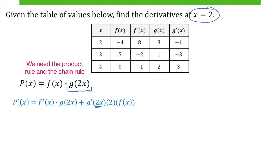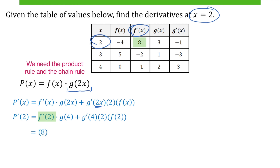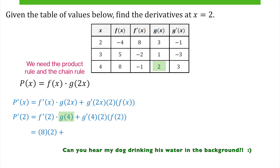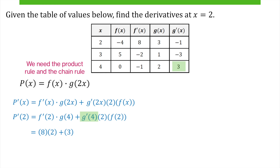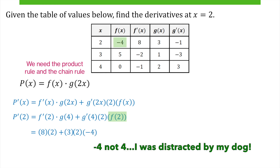It wants the derivative at x equals 2, so anywhere we see an x, we'll plug in a 2. To evaluate this we need to find f prime of 2, g of 4, g prime of 4, and f of 2. Glancing up and back at the table: f prime at x equals 2 is 8, g of 4 is 2, g prime of 4 is 3, and f of 2 is 4. Simplify that and we get negative 8.